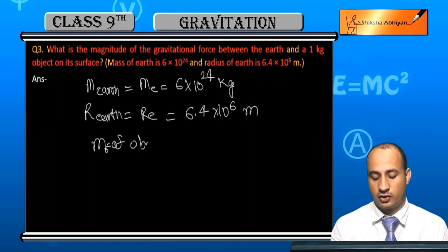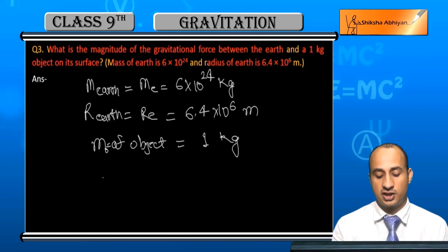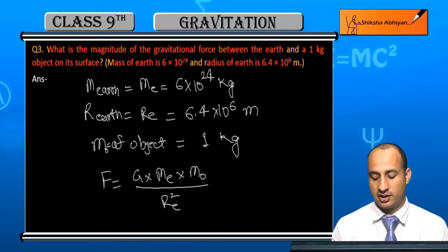The gravitational force will be F = G × m_earth × m_object / r_e^2, where r_e is the radius of earth.